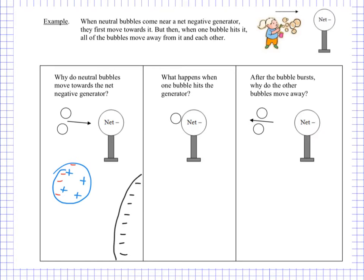If I put a little ring around this part of the bubble, this part of the bubble has a net positive charge — it's got a positive region. And that is what's going to create the attraction initially. This positive region is going to experience a force towards the Van de Graaff. Of course, the Van de Graaff is going to feel an equal and opposite force, except the Van de Graaff has a significantly greater mass, and therefore it's the bubble that's going to move. So that explains why the bubbles move towards the generator initially.